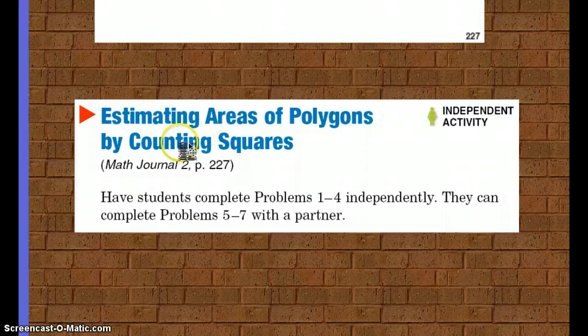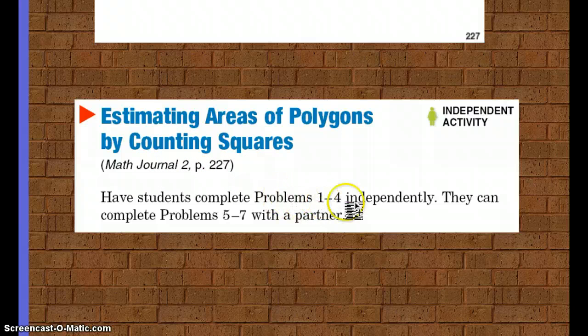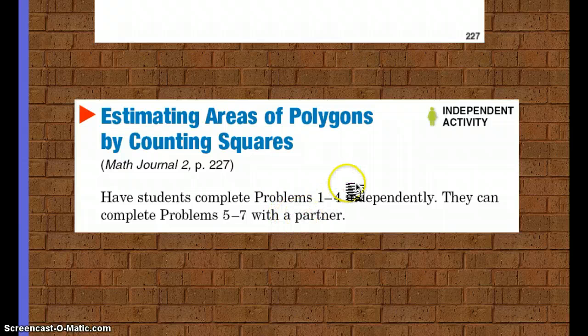Estimating areas of polygons by counting squares. You need to go to Math Journal page 227. Complete problems one through four independently. If no one else is at your same spot, then go ahead and do five to seven alone also.